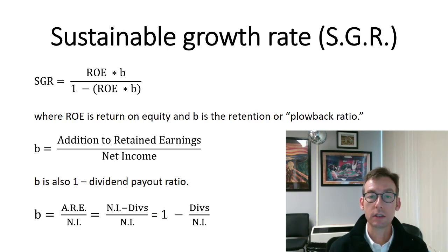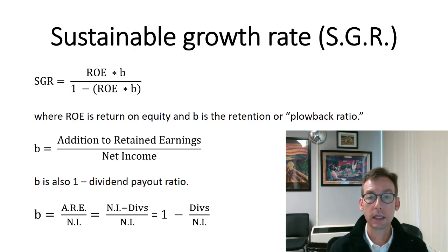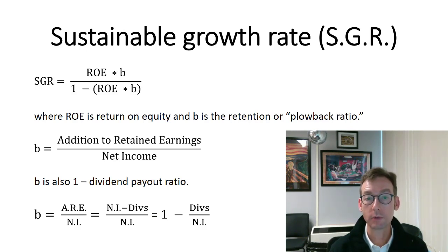In other words, we use our addition to retained earnings from inside the firm and the amount of additional debt necessary to maintain our constant debt-equity ratio. This is a fairly common goal to maintain the constant capital structure of the firm, because we theorize that for a given industry there is an optimal mix of debt and equity to trade off expected costs of financial distress with the tax benefits that debt can bring.